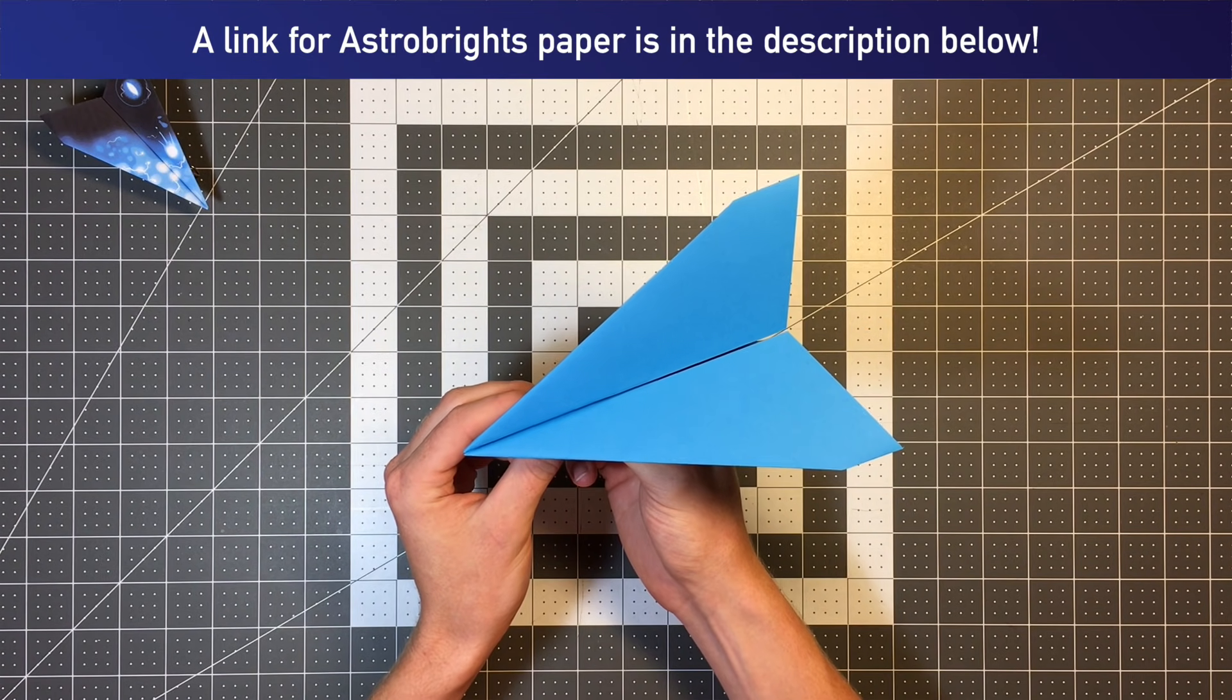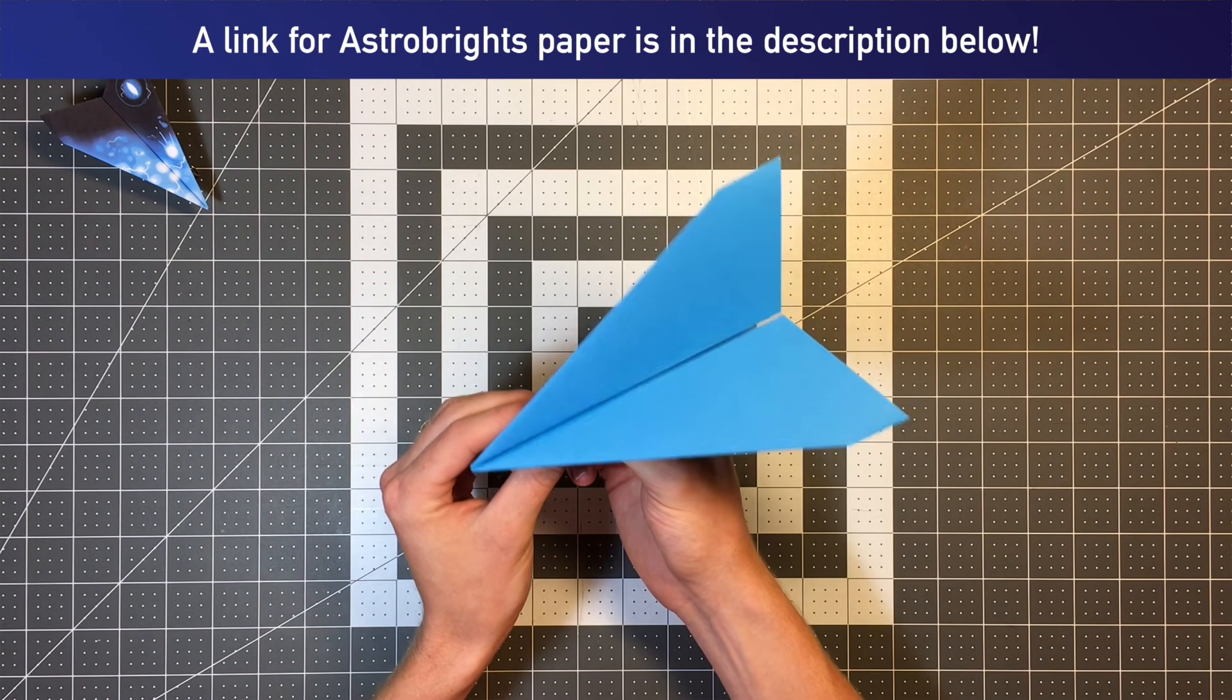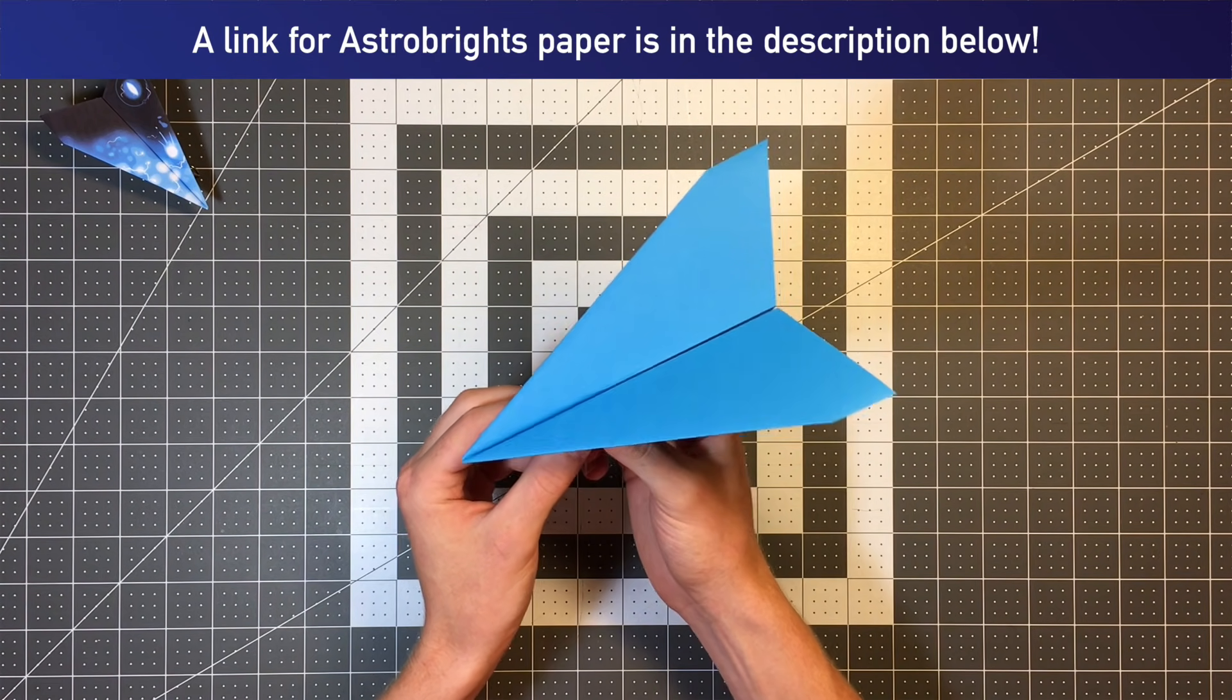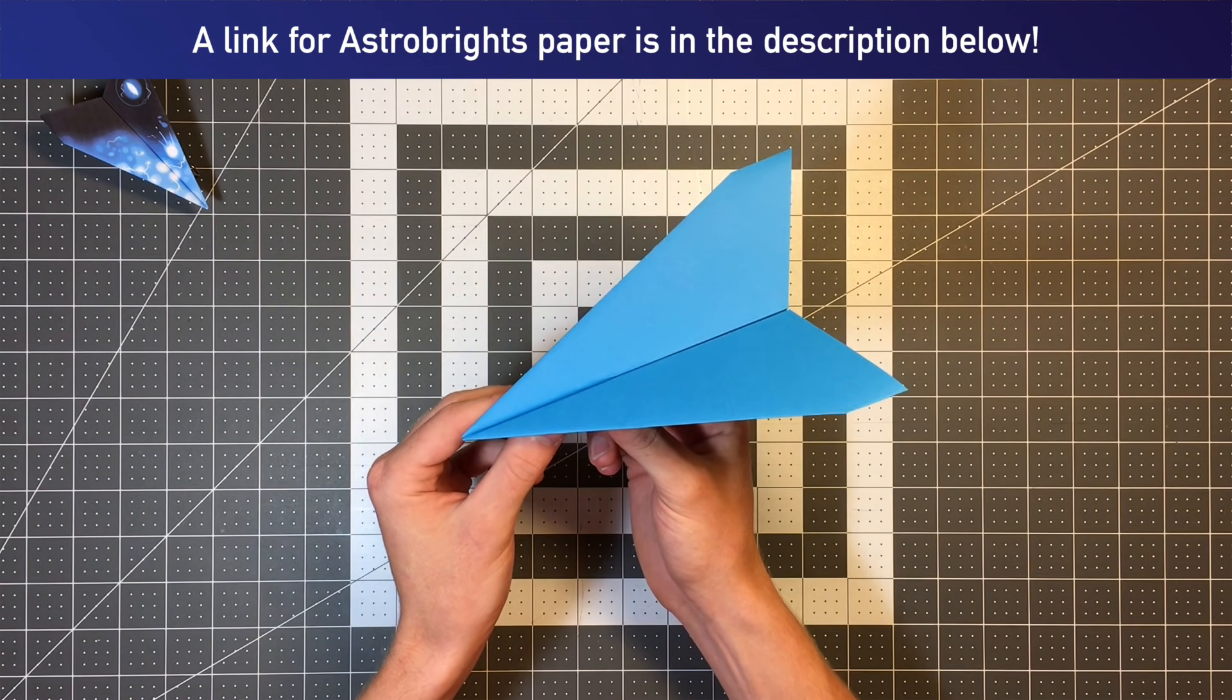I folded this one using Astrobrite Celestial Blue paper. I just like Astrobrites because it's a little bit thicker than normal paper and they have brilliant colors.